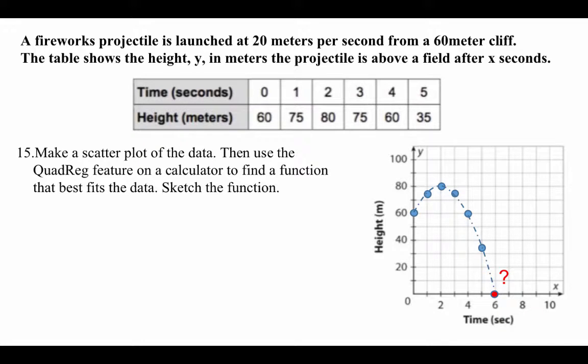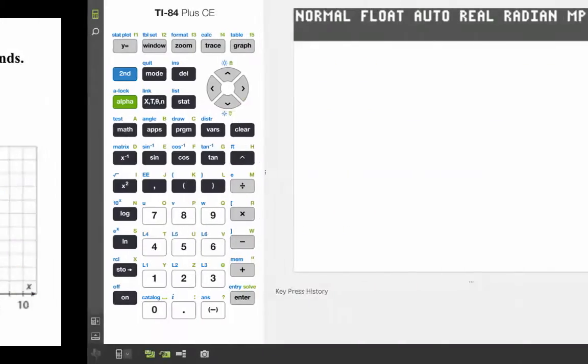The question is asking, after we scatter plot, use the quadratic reg feature on the calculator to find the function that fits this data. The question is, how do you do that? So take out your TI-84, and let's take a look.